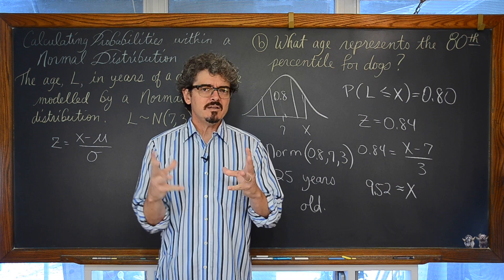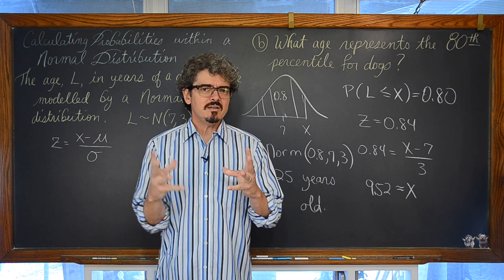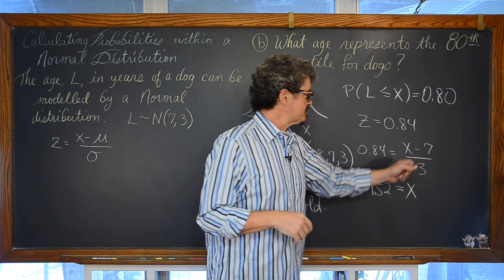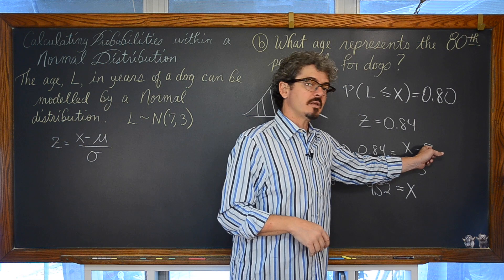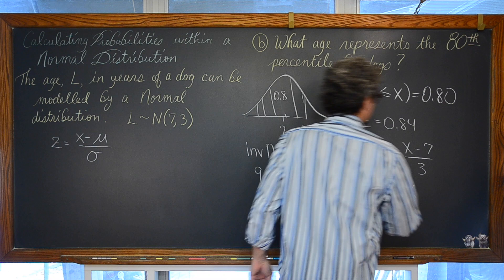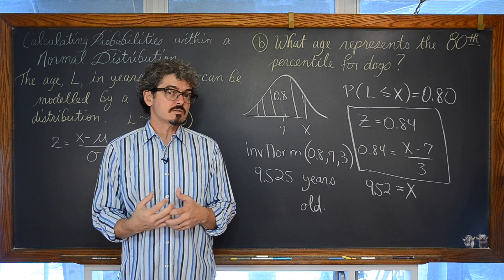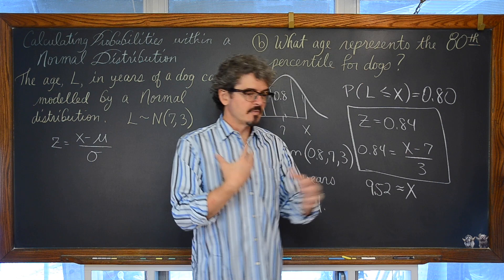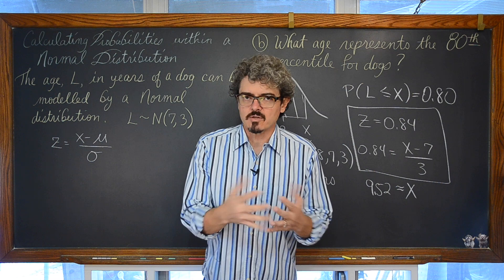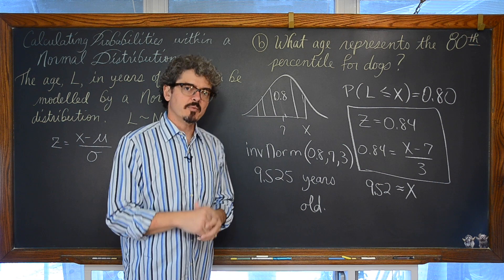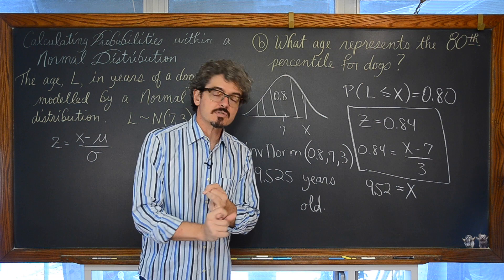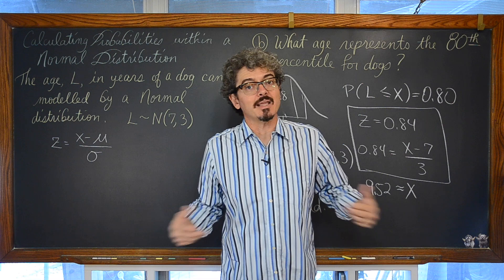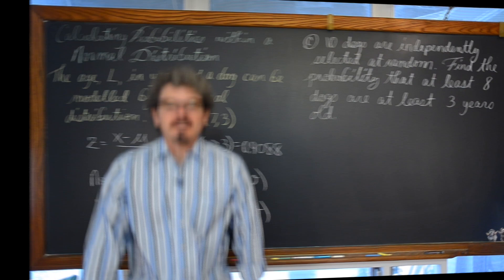Working with normcdf and invNorm commands in the calculator speeds up calculations within normal distributions quite a bit. However, the z-score formula — z equals x minus population mean over standard deviation — is still important because problems can give you enough information to set up a system of equations involving the z-score, mean, or standard deviation. You still cannot forget the basics. Part C coming up right now.